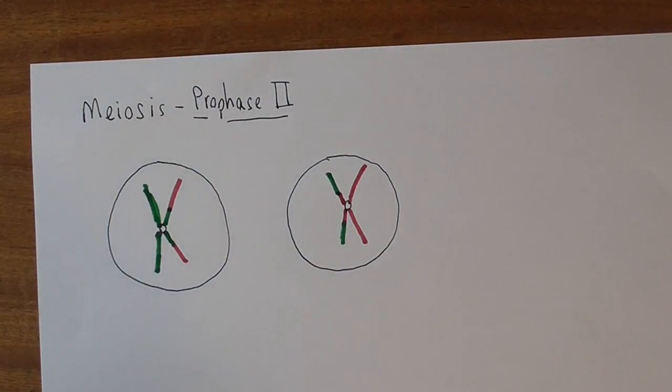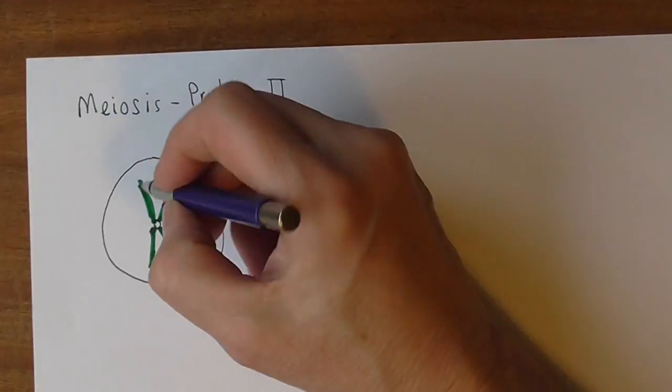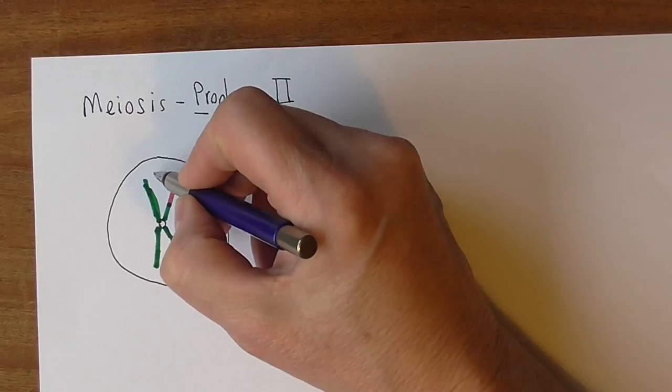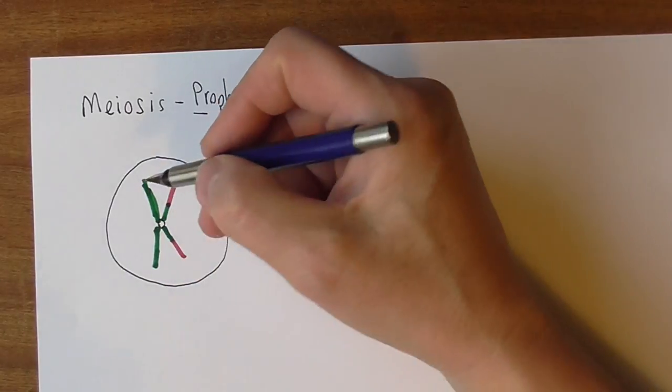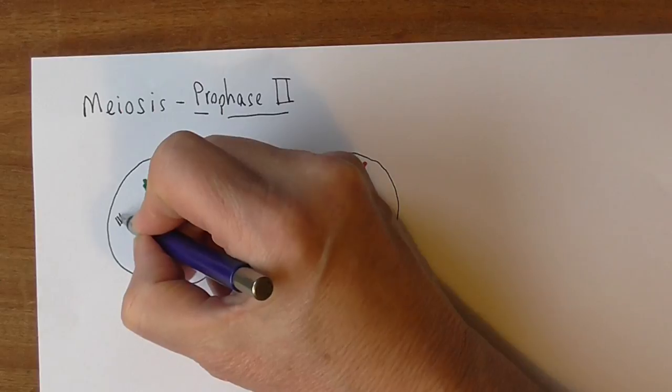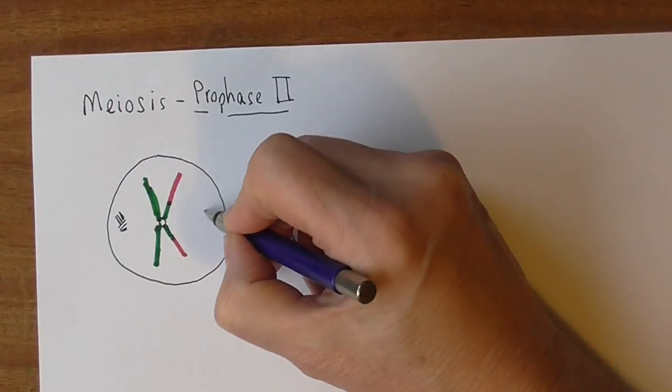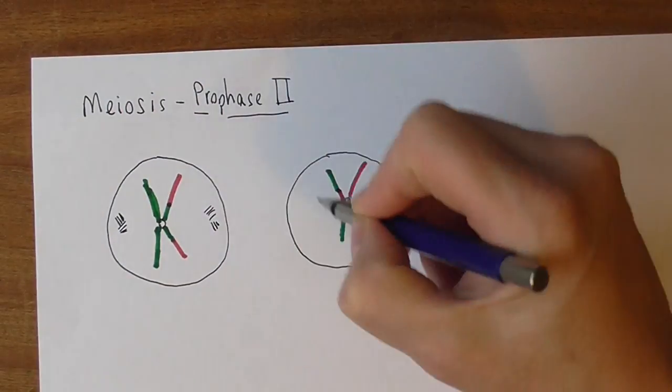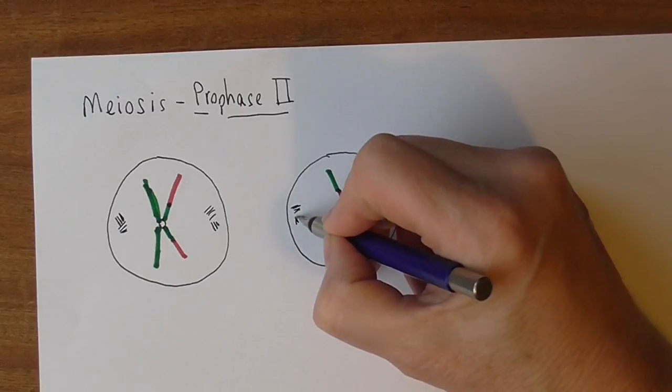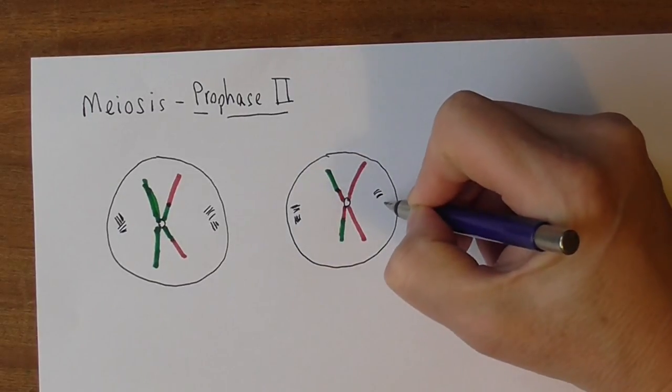Now the centrioles duplicate. So there was one centriole in this cell at the end of the last stage telophase 1 and they duplicate and they go to the relative poles of the cell. So we end up with centrioles there and there. Clever the way that the centrioles can divide and duplicate as well.